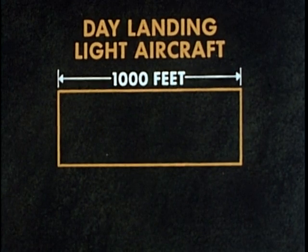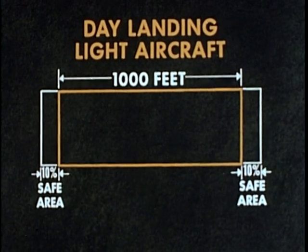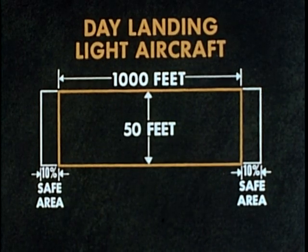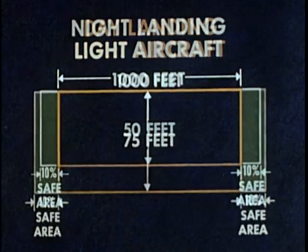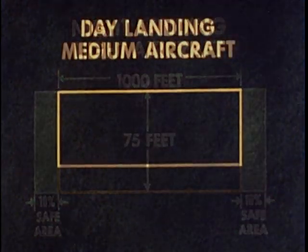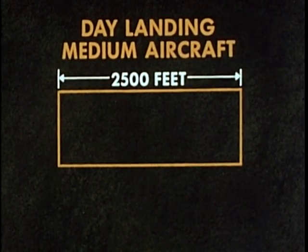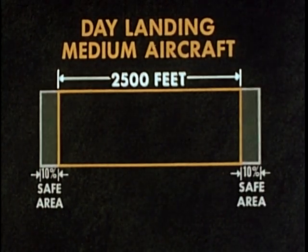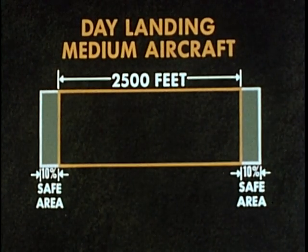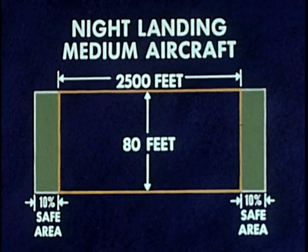For day operations of light aircraft, the LZ size should be 1,000 feet long, with a 10% safety factor added to each end, and 50 feet wide. For light aircraft night operations, the runway is widened to 75 feet for additional safety. Medium aircraft require a longer runway — 2,500 feet — plus 10% for safety zones added at each end, and a landing width of 60 feet. For night landings, the width is increased to 80 feet.